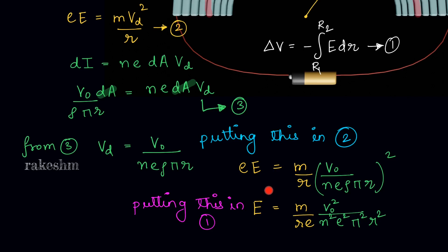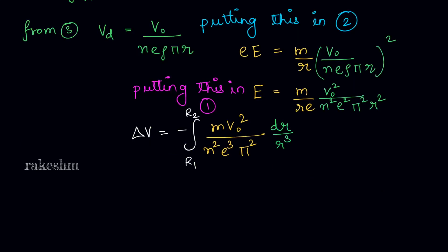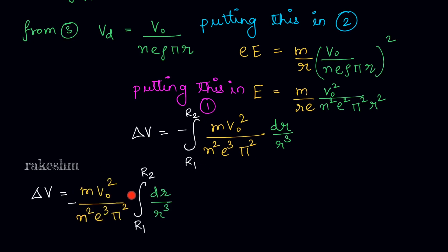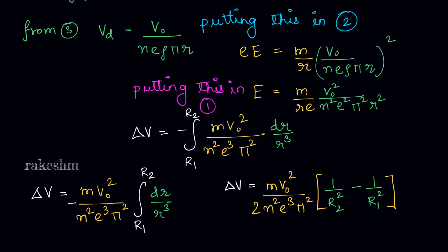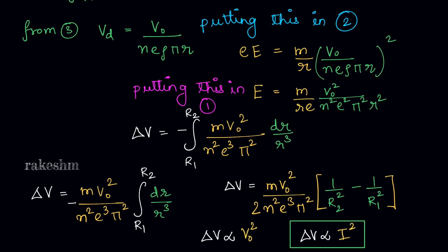Substituting E into equation 1, we get delta V equals minus the integral from R1 to R2 of m·V0² divided by N²·e³·pi²·rho² times dr/r³. The constants come out of the integral, and integrating dr/r³ gives (1/R2² − 1/R1²)/2. So delta V equals m·V0²/(2·N²·e³·pi²·rho²) times (1/R2² − 1/R1²). Since delta V is proportional to V0² and V0 is proportional to I, we get delta V proportional to I². Option D is also correct.